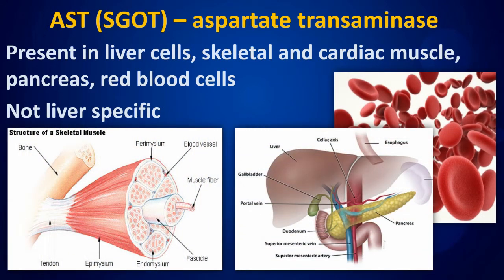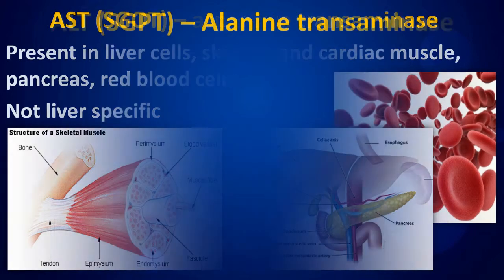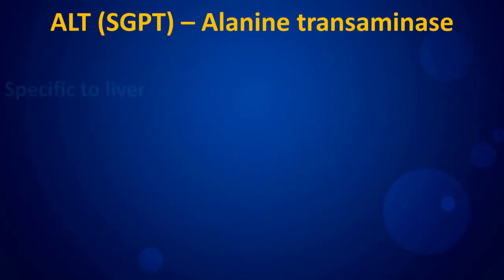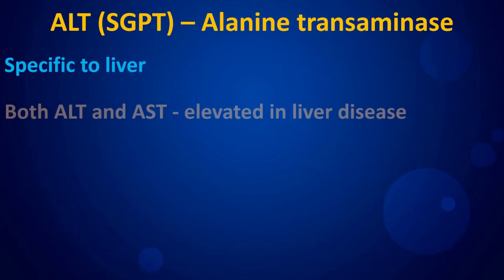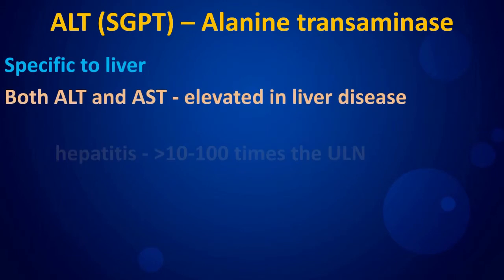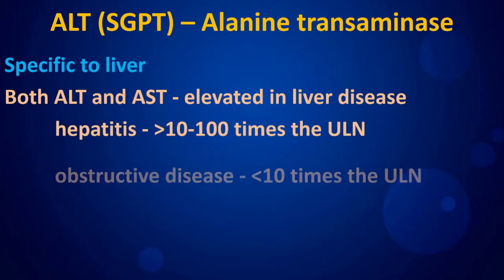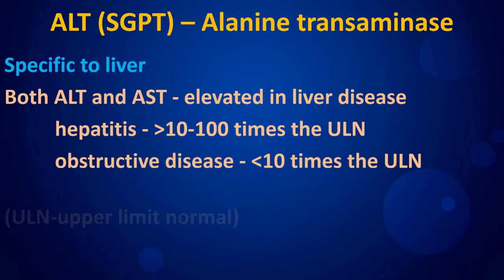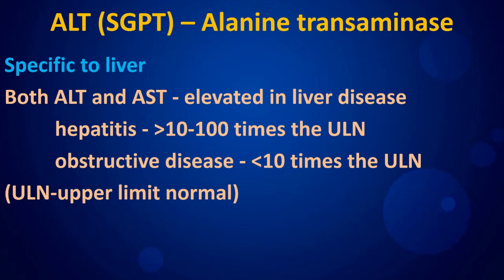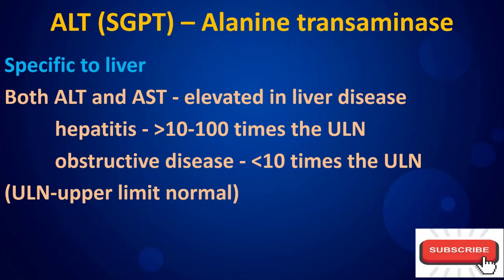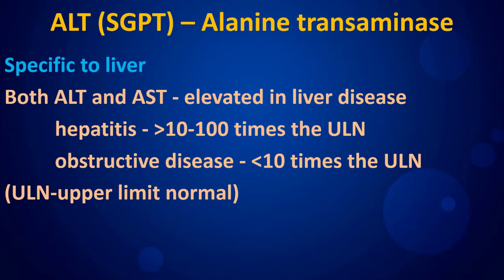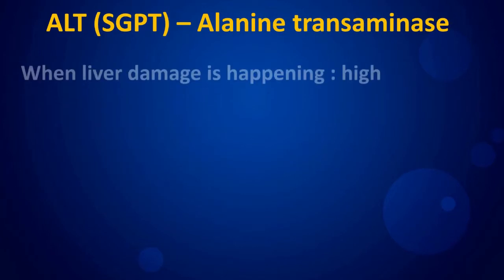AST is not liver-specific, whereas ALT is specific to the liver. Both ALT and AST are elevated in liver disease. In hepatitis, they rise more than 10 to 100 times the upper limit of normal, whereas in obstructive disease they rise less than 10 times the upper limit of normal.